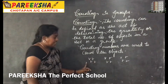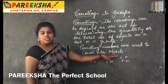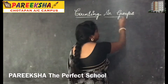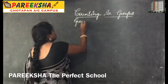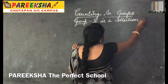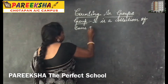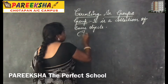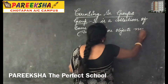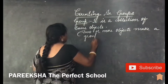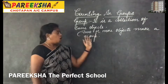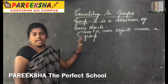These are the total number of objects, and this is considered as a group — in a set or a group. Counting numbers are used to count the objects. Now we are going to learn the definition of groups. A group is a collection of same objects. Two or more objects make a group.